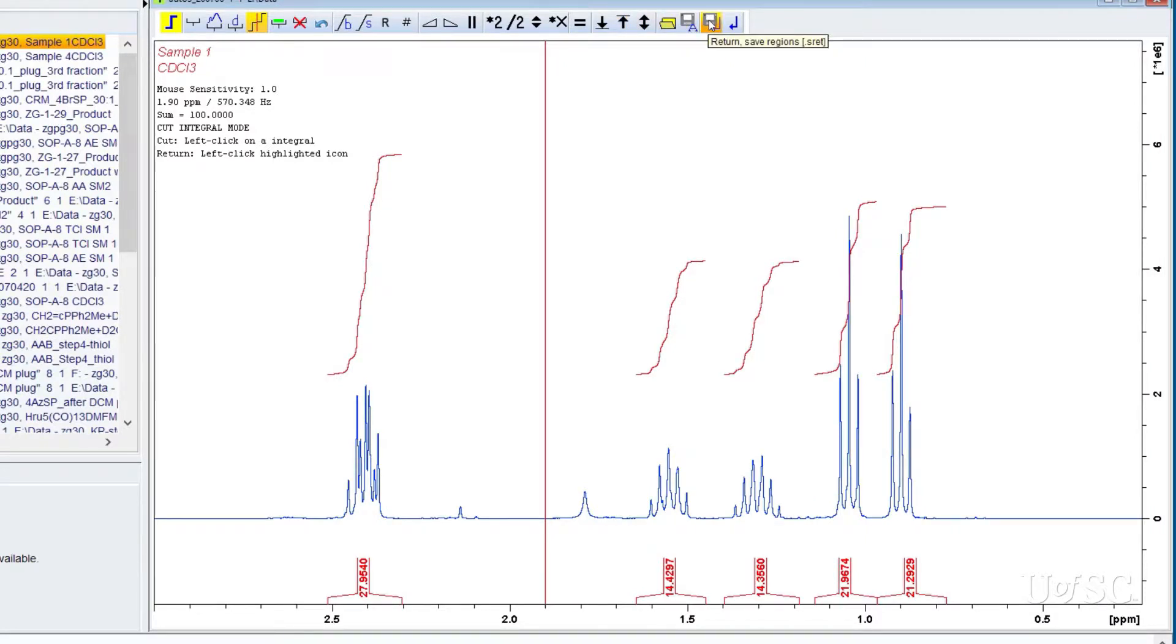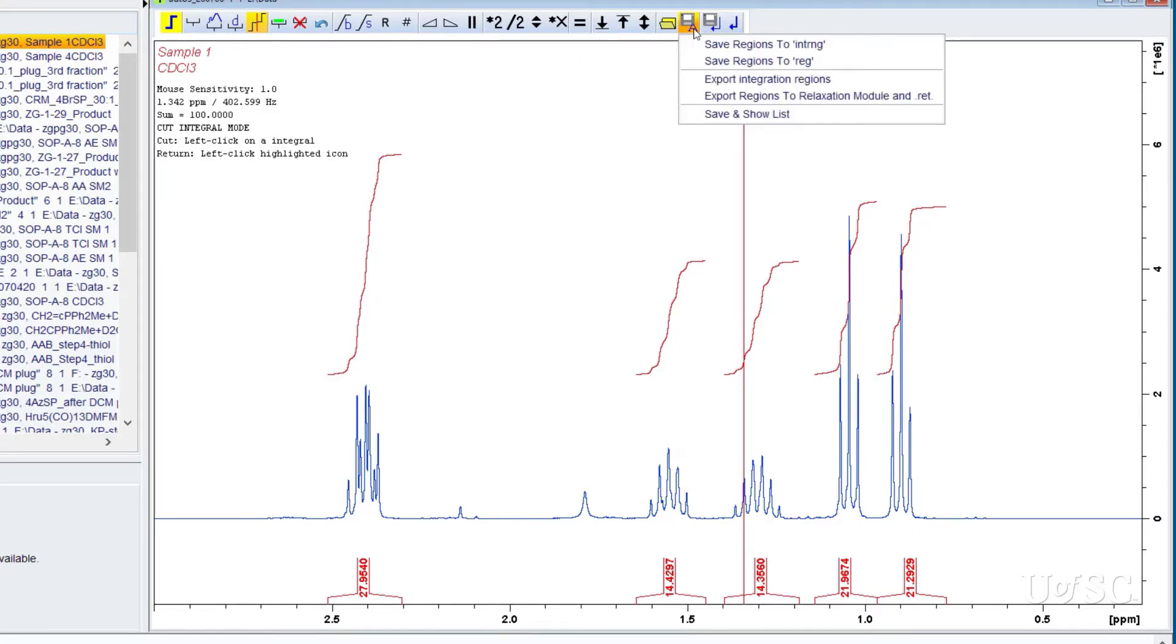Abandon your changes with the button with only the return icon. The save as button, with the A in the icon, will allow you to save integral regions and apply them to other spectra. This is very useful for analyzing multiple samples with similar composition.